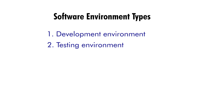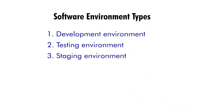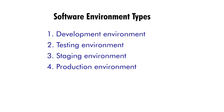Testing environment: this environment is used by testers to perform functional, regression, and performance testing. It is designed to replicate the production environment as closely as possible, including the hardware, software, and all the configurations. Staging environment: this environment is used for user acceptance testing and pre-production testing. It is similar to the production environment but with a limited number of users and reduced data volume.